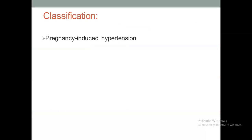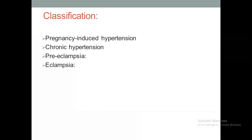The classifications of hypertension in pregnancy include: pregnancy-induced hypertension, chronic hypertension, preeclampsia, eclampsia, and imminent eclampsia — also called fulminating or culminating preeclampsia. All of these will be discussed in detail.